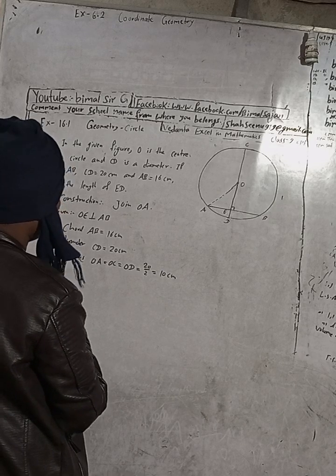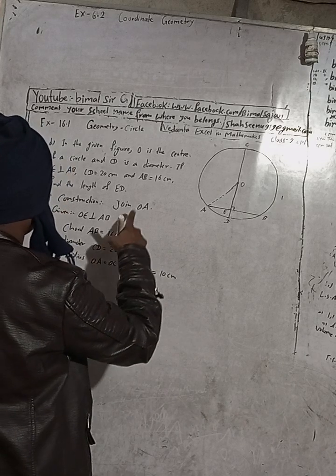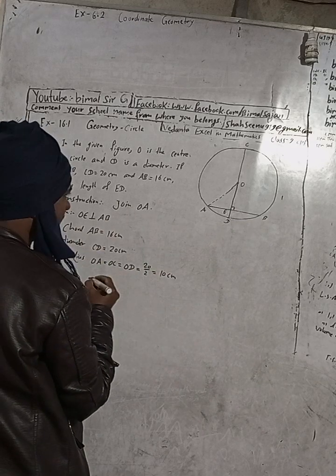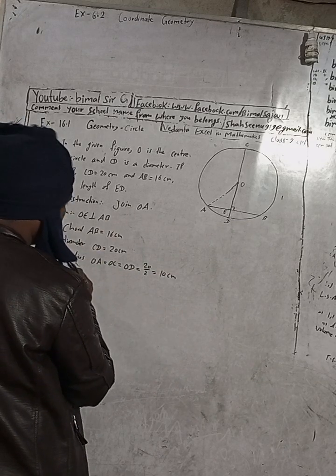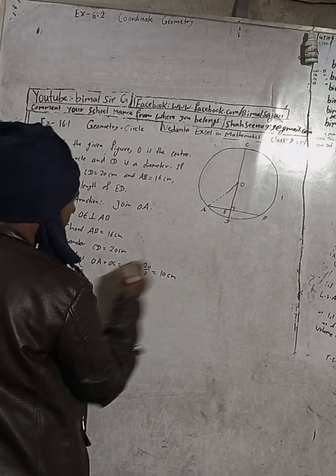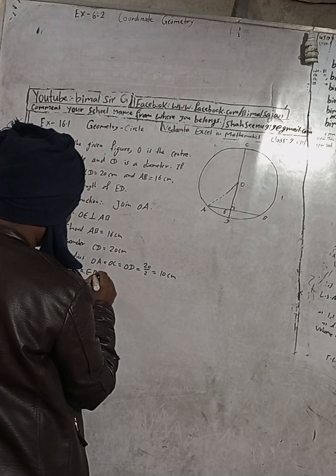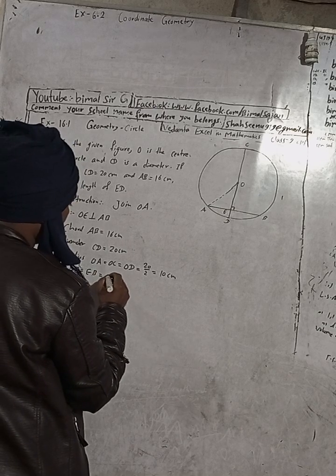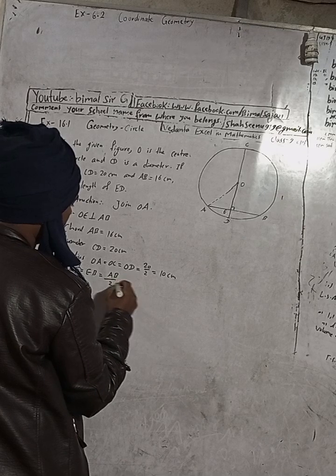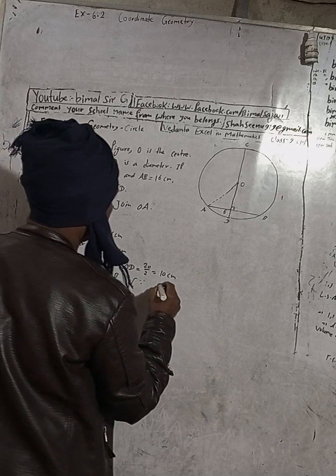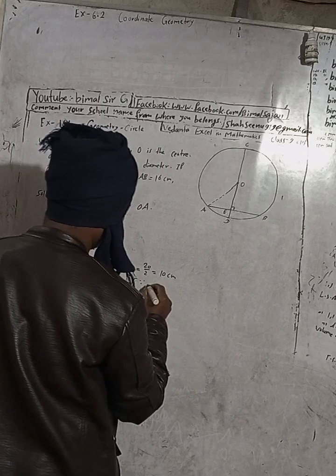Since OE is perpendicular to AB, by the theorem, AE is equal to EB, and AE is equal to AB divided by 2. The reason is that OE is perpendicular to AB.